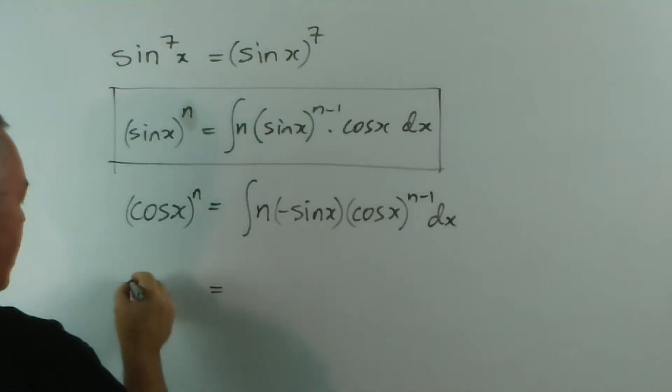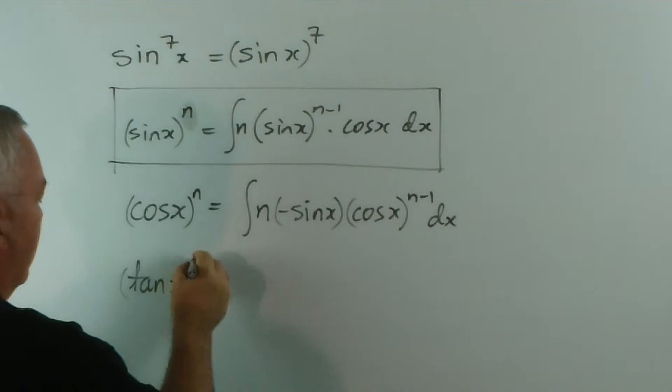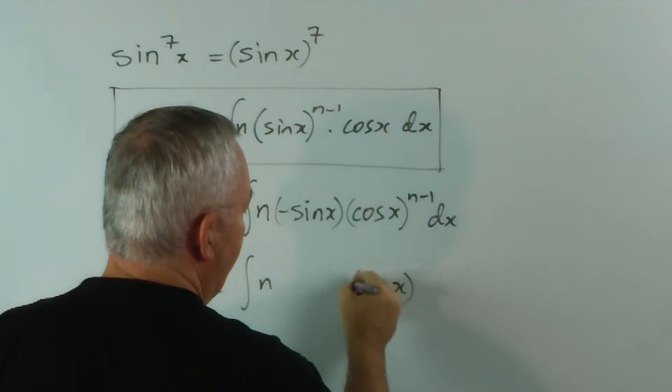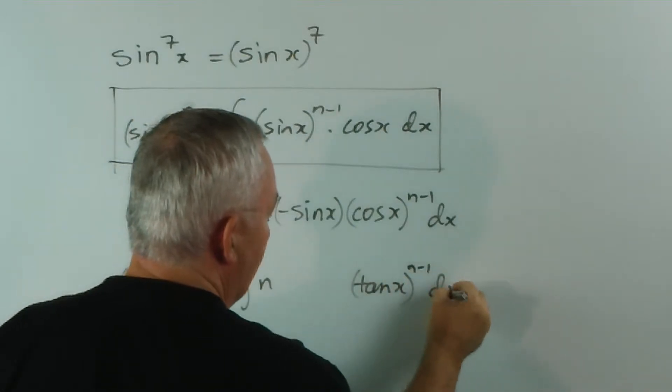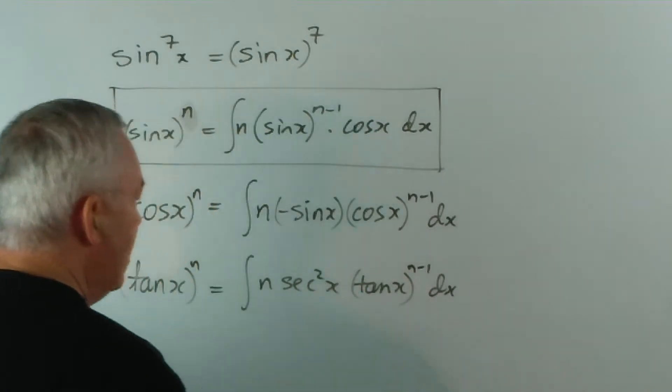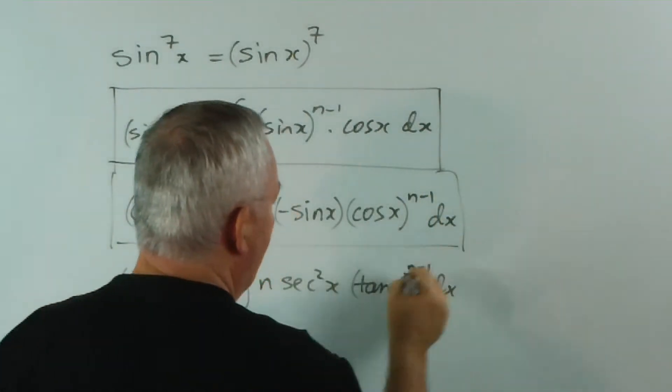And if I'm finding tan x to the power of n, I'm integrating n tan x, and the derivative of tan x is sec squared x. So these three patterns are the ones I'm looking for.